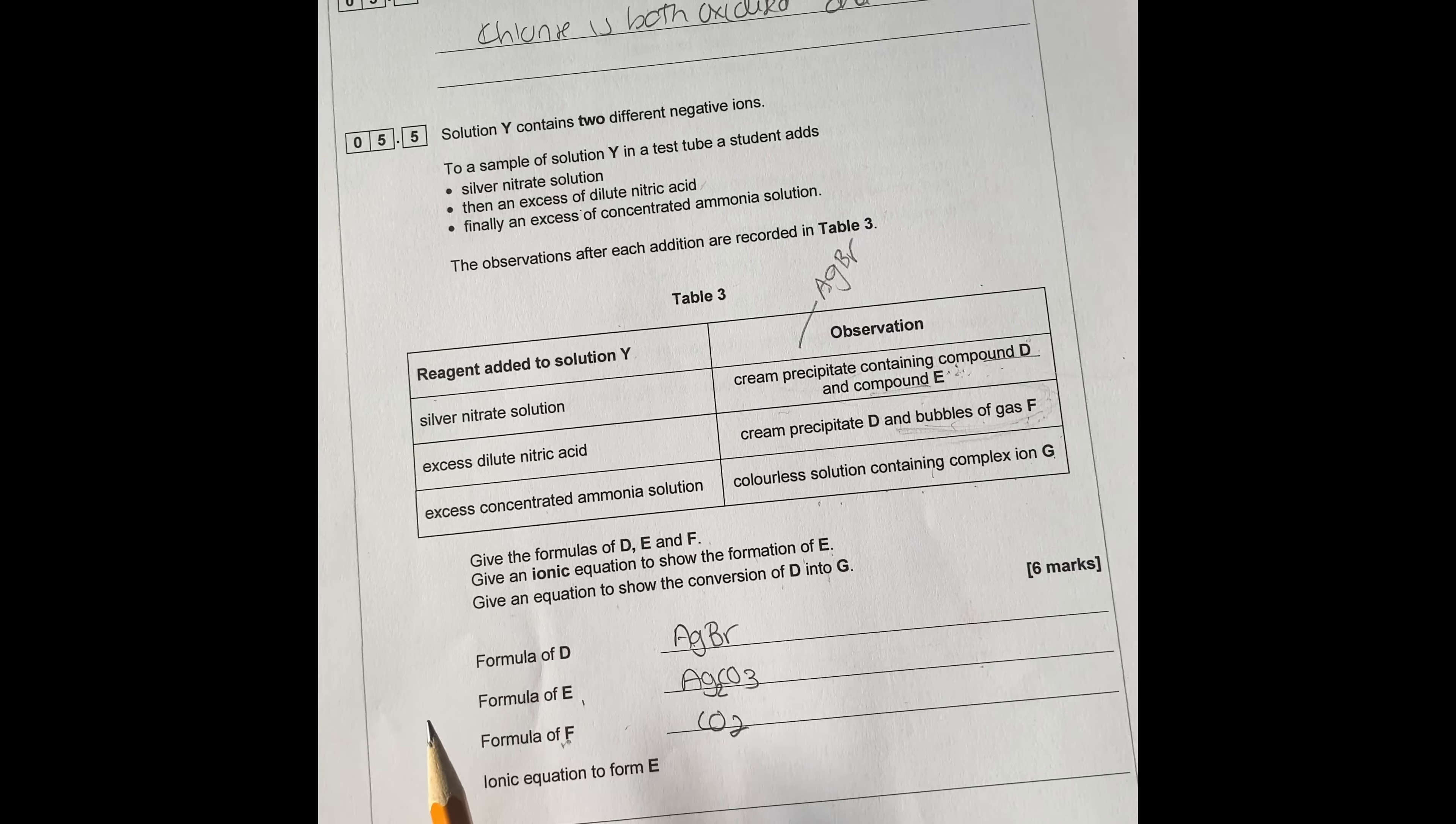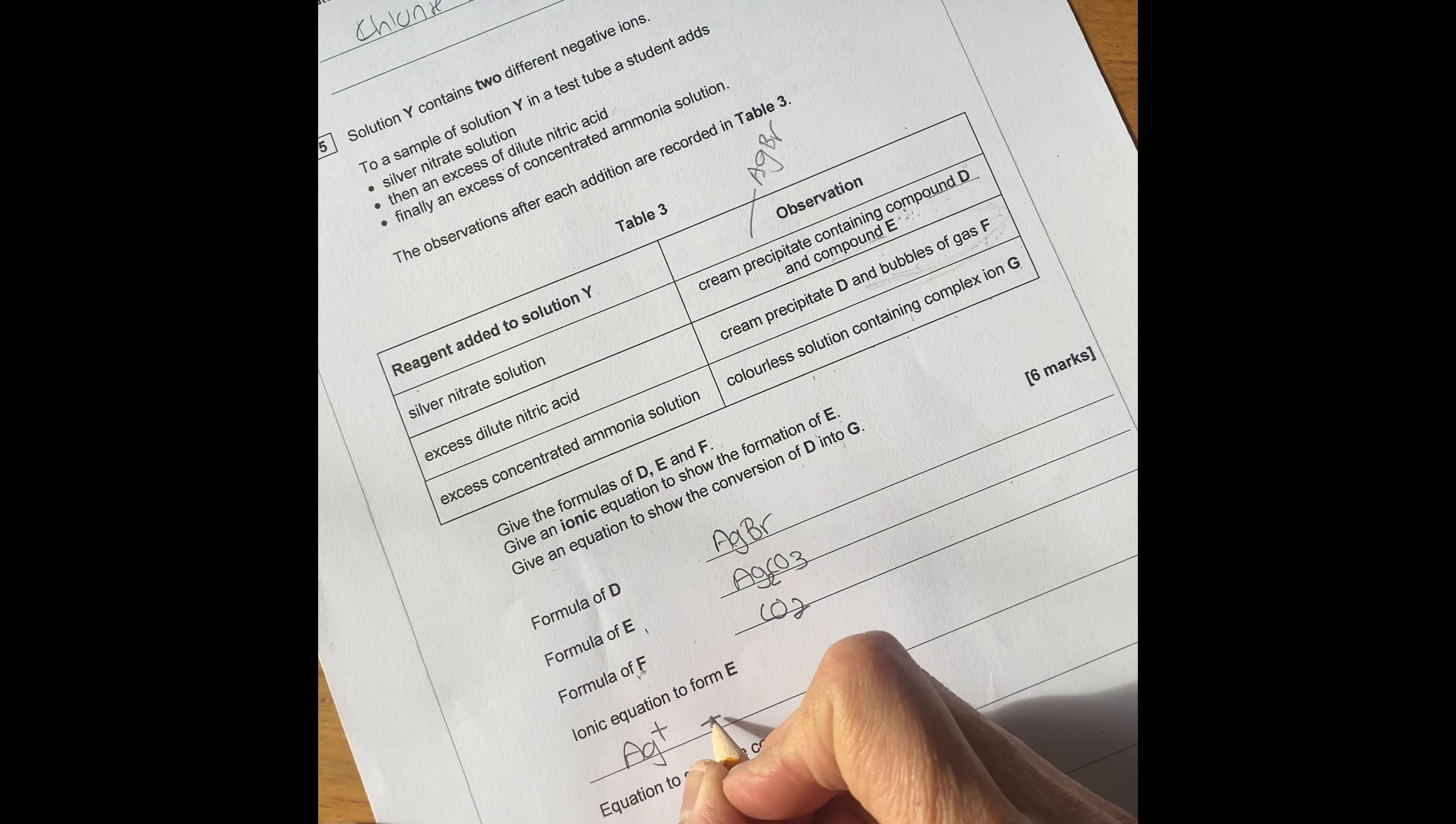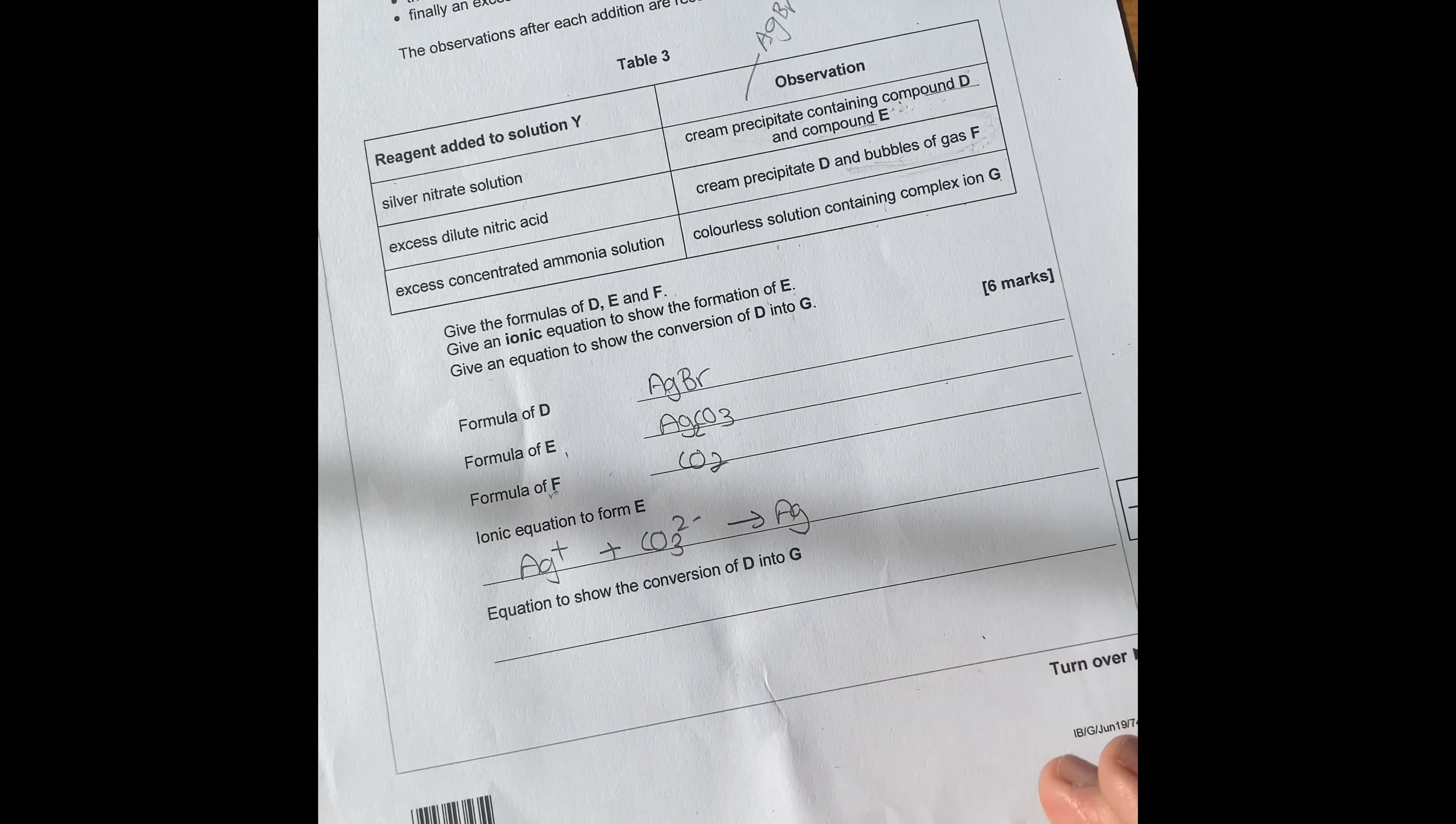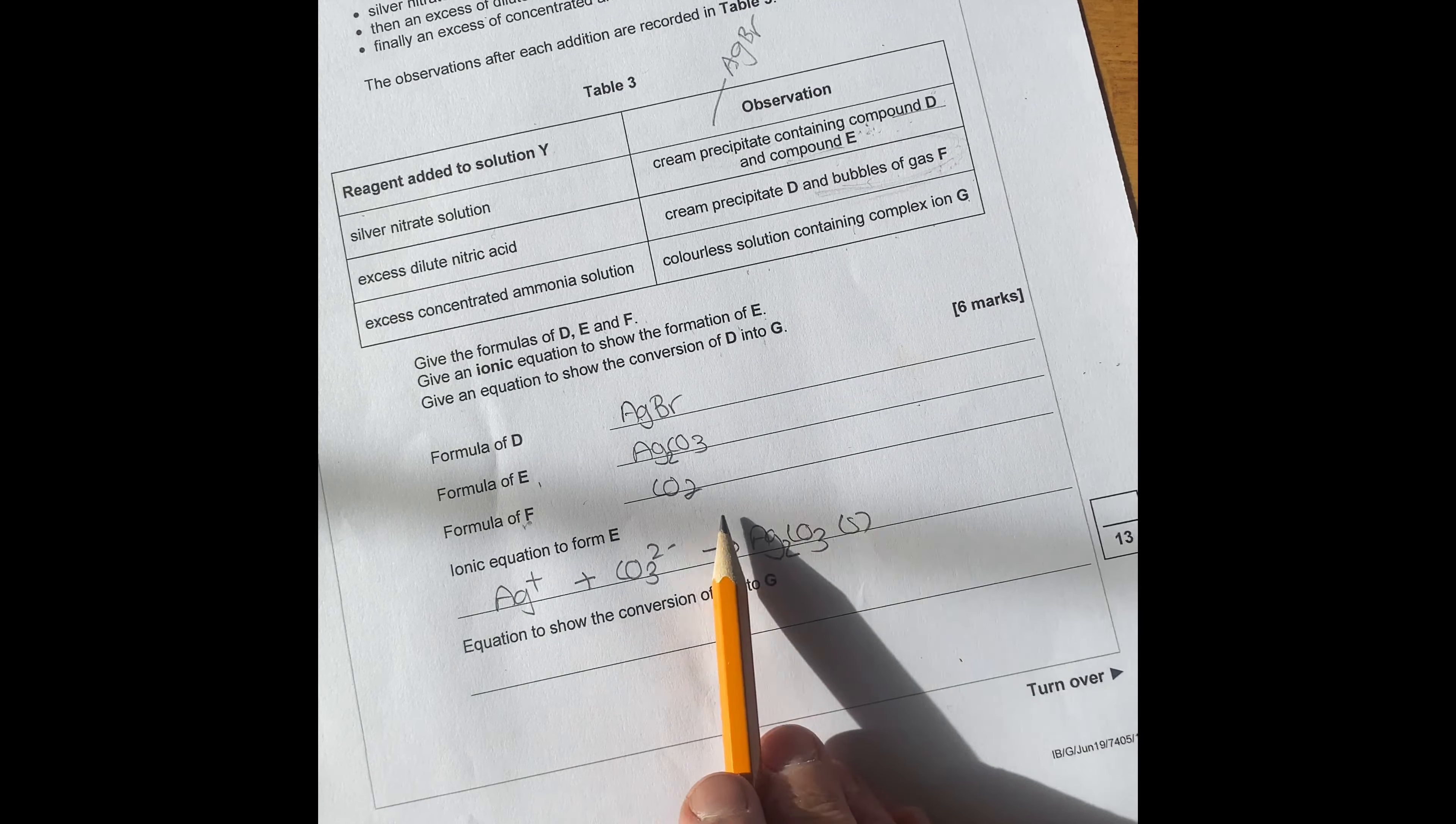Ionic equation to form E, which is this one here, so it's going to be Ag plus, plus CO3 2 minus, which is your carbonate, gives Ag2CO3 solid. So that's going to be your equation, but you've got to balance - that's two silvers there, so you balance with that.